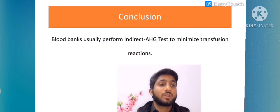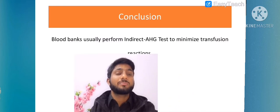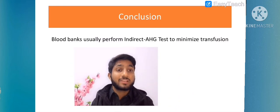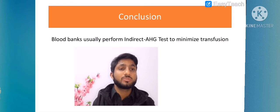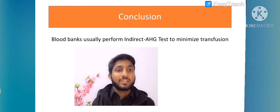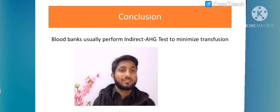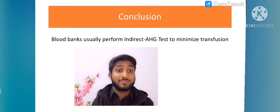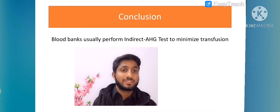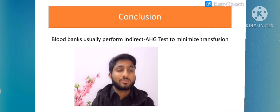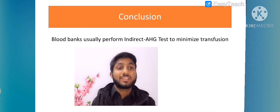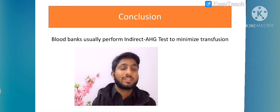Conclusion: blood banks usually perform indirect anti-human globulin testing to minimize transfusion reactions. We use anti-AHG protein for both direct and indirect AHG testing. More specifically, in indirect AHG testing we use recipient serum with donor cells. In direct antigen testing, we use donor cells and patient serum.